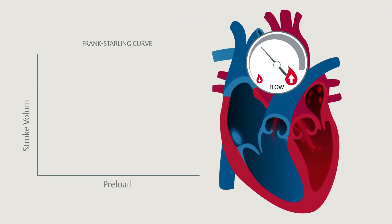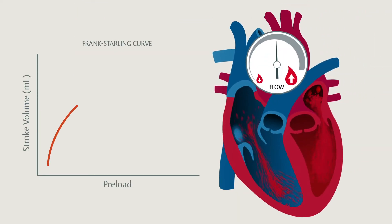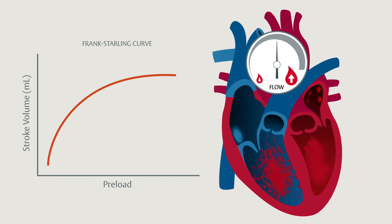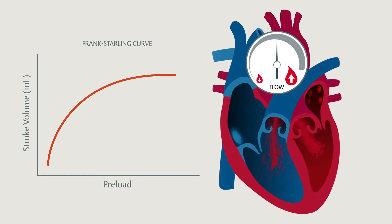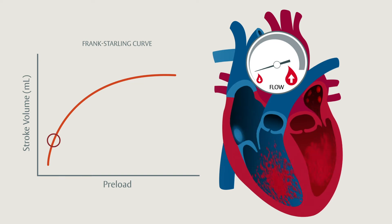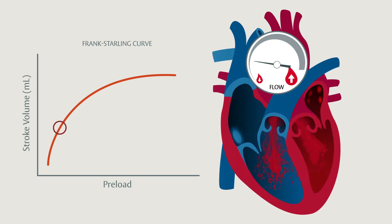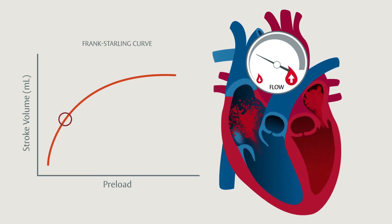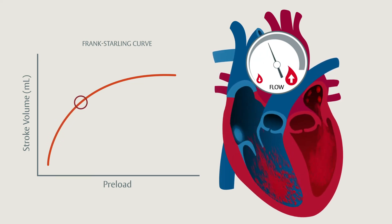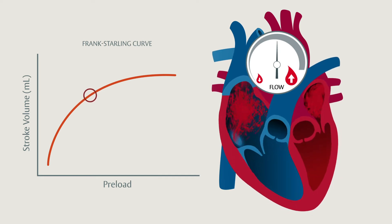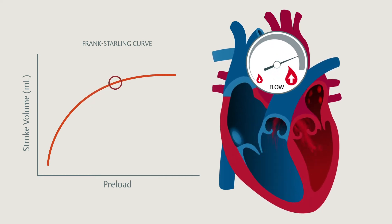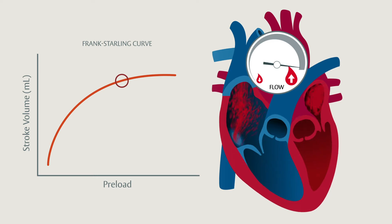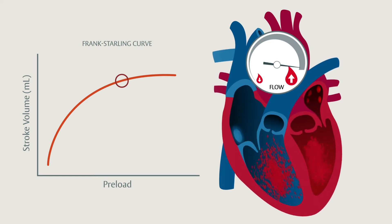Using this approach to haemodynamic management allows you to optimise preload to improve stroke volume and cardiac efficiency. Optimal filling of the left ventricle in turn optimises contractility. Optimising both stroke volume and contractility ensures an ideal cardiac output for a patient, unless they have pre-existing cardiac dysfunction.